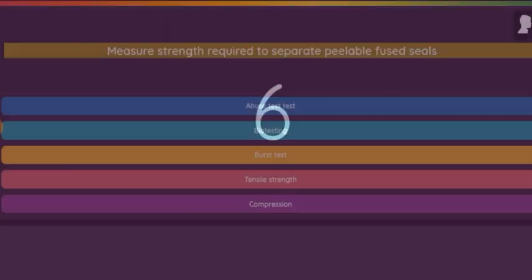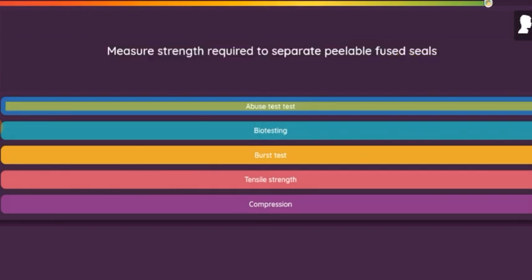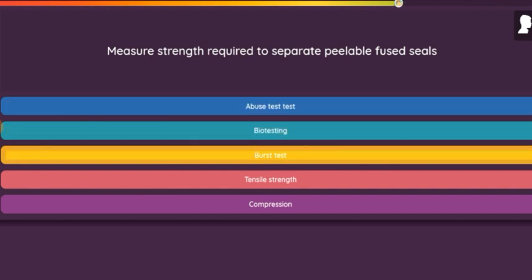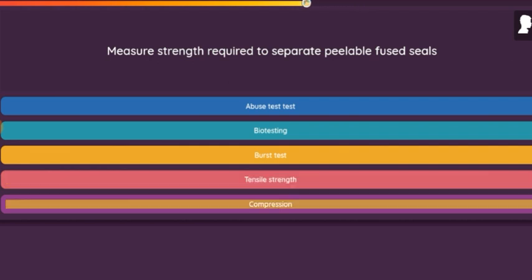Question: Measure strength required to separate peelable fused seals. Option 1: Abuse Test. Option 2: Bio-Testing. Option 3: Burst Test. Option 4: Tensile Strength. Option 5: Compression.